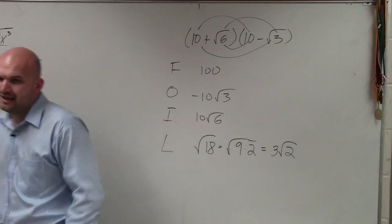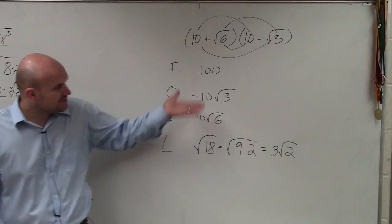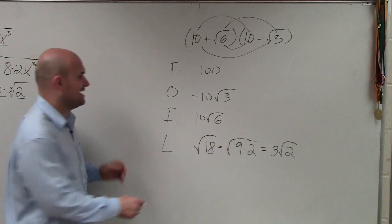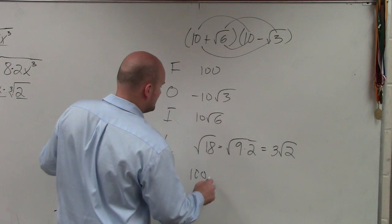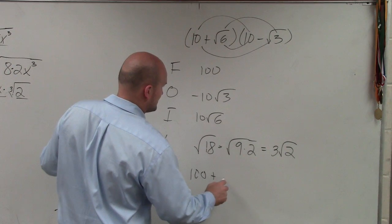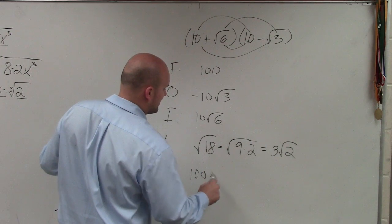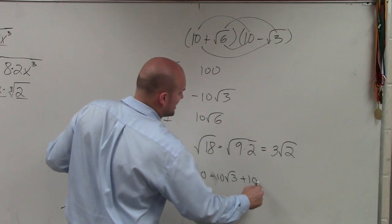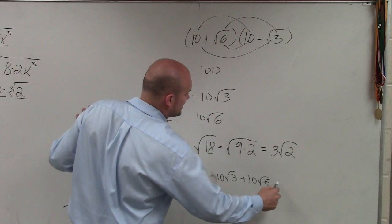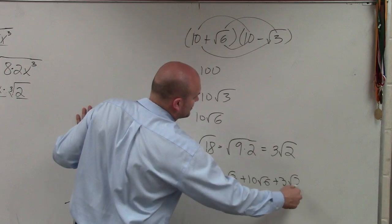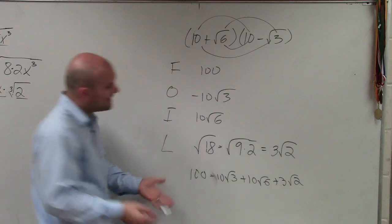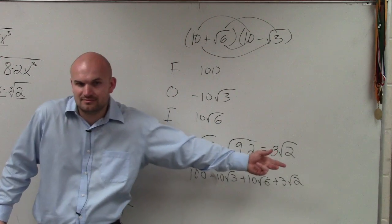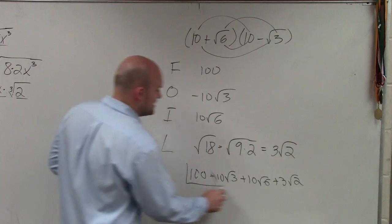Do you guys agree? And now, unfortunately, there's really no terms I can combine, but I can write my answer as 100 minus 10 square root of 3 plus 10 square root of 6 plus 3 square root of 2. I can't combine these because they don't have the same radicand. So I just have to leave them, and that's my answer.